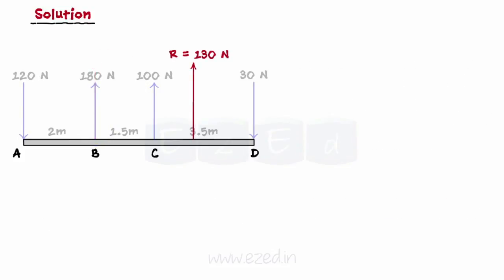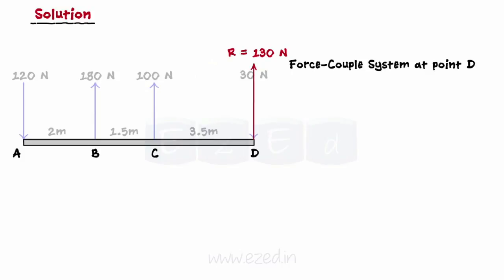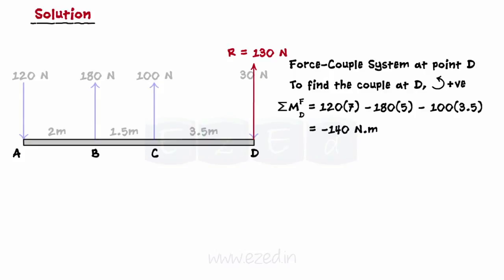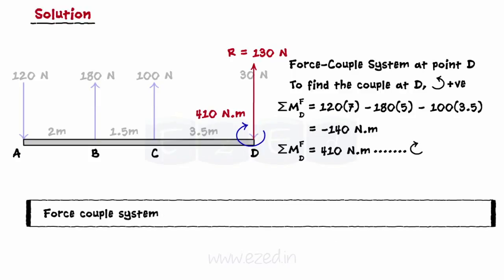Now, we have to replace the entire system by a force-couple system at point D. The single force acting at D would be the resultant, that is 130 N. To find the couple at D, add up moments of all forces about point D with the sign convention as anticlockwise positive. On calculating, this is found to be 410 N meters in clockwise sense. Thus, the force-couple system at point D is defined by the force of 130 N and a clockwise moment of 410 N meters.